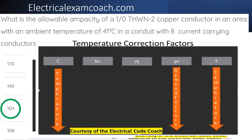Then we're going to head over to our temperature correction factor table. We start on the left-hand side because the temperature is in Celsius. We come down to find our temperature, but we have to be sure to cross all the way back over to the 90 degrees C column to actually get the correction factor.